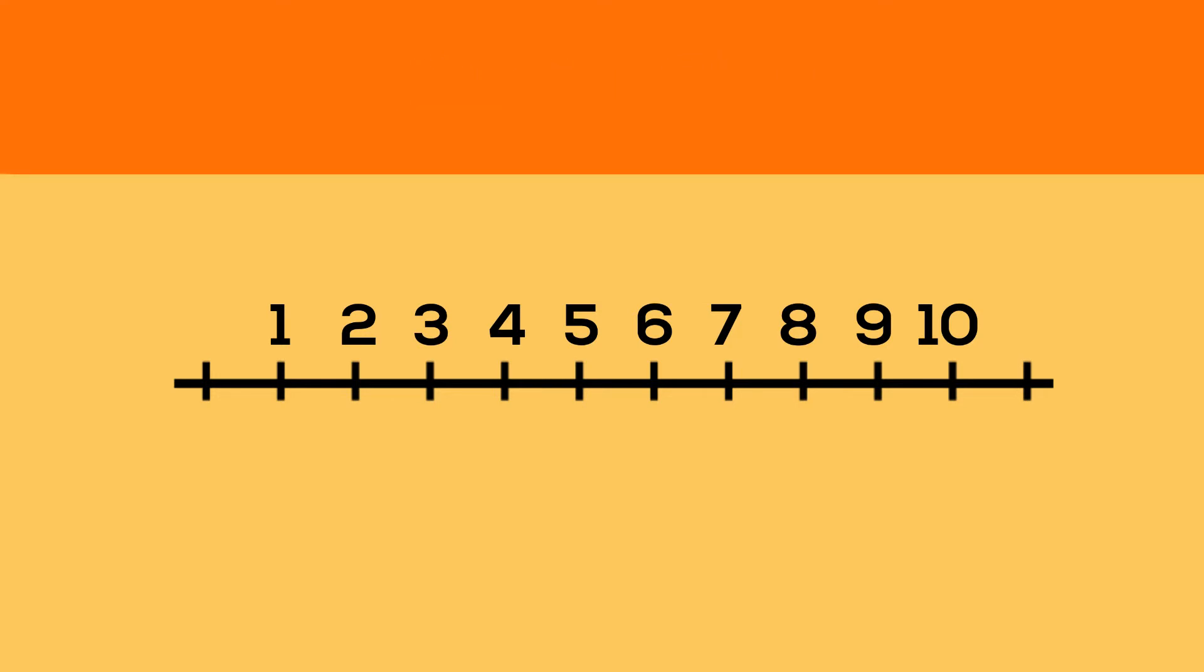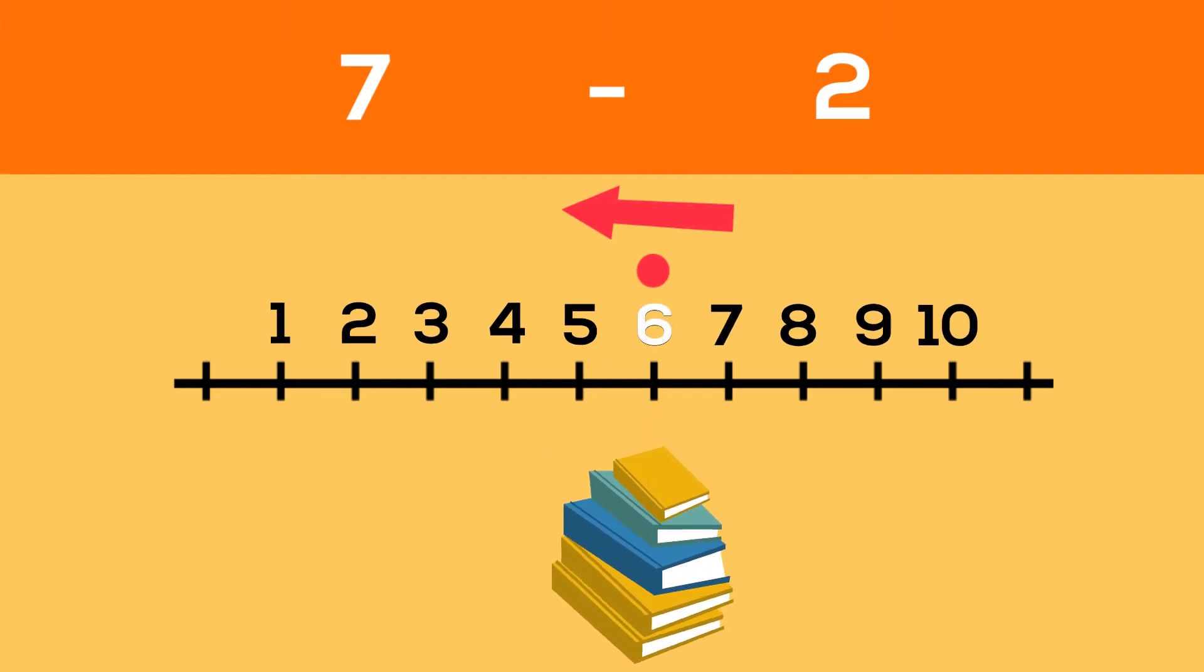Let's use the number line again. Jake borrowed seven books, so we start at seven. Since he would be returning two books, let's move to the left twice. Let's count again: one and two.